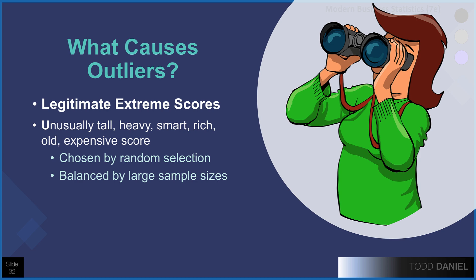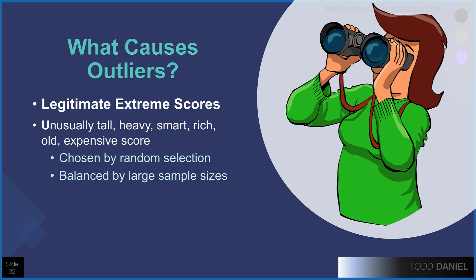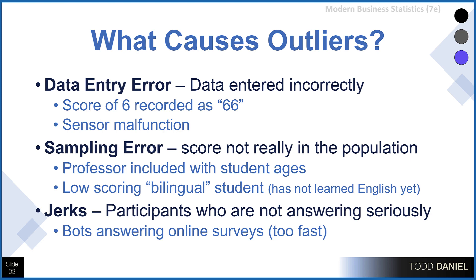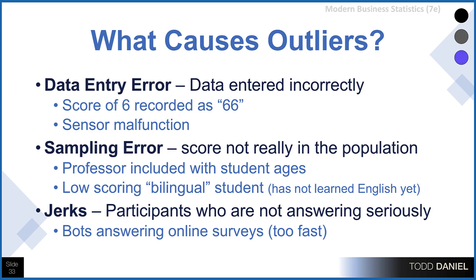When we have a larger data set, the larger number of scores will help balance out those outliers. This is one reason why it's good to have as many people or participants or observations in your data set as you possibly can. Our first cause for outliers could be a legitimate score — nothing we've done wrong. On the other hand, we could have a data entry error, where the data were simply entered into the data set incorrectly. The score was supposed to be a 6, it was recorded as a 66. This creates an outlier. Perhaps there was some sort of malfunction with a sensor measuring reaction time, giving us an unusually high or low score.